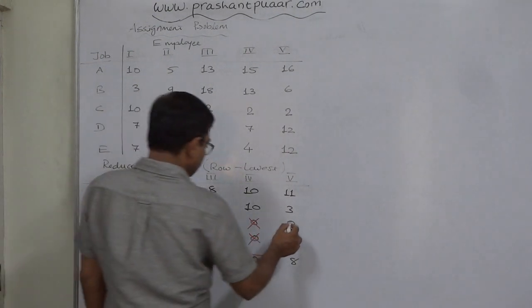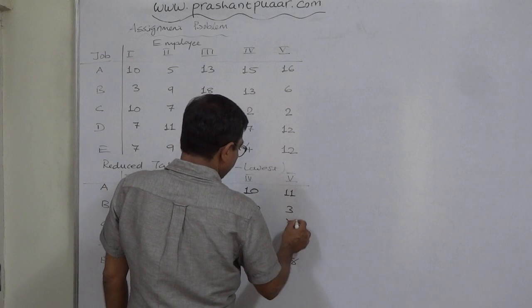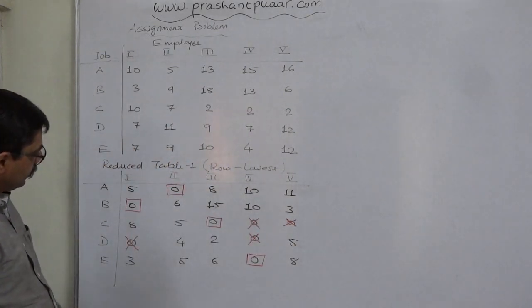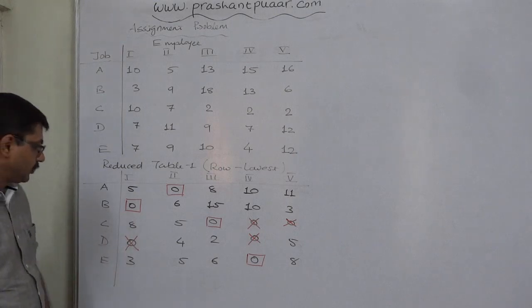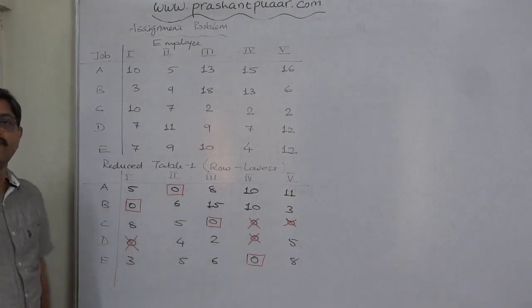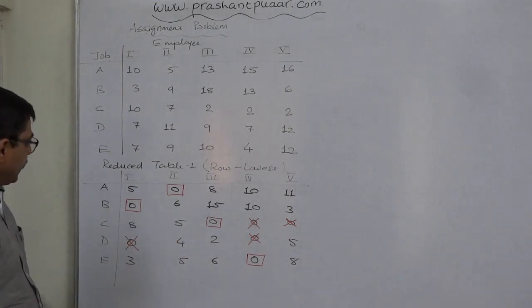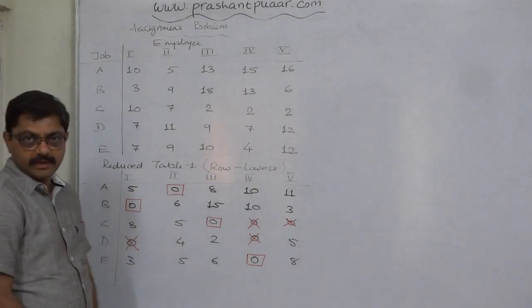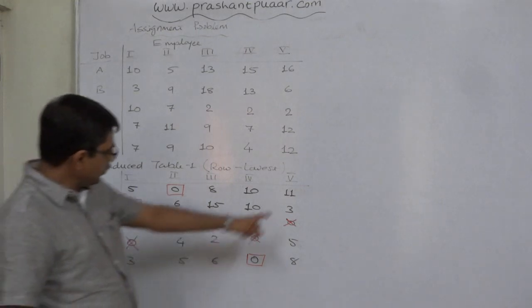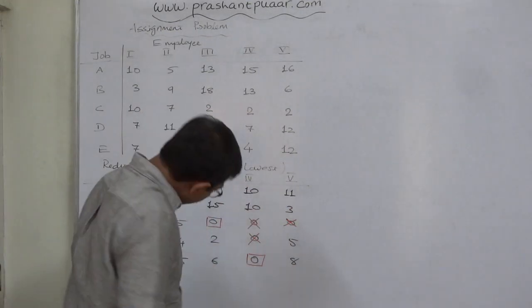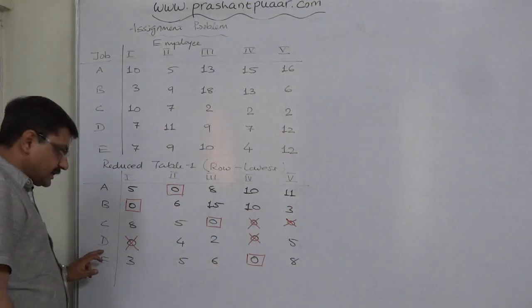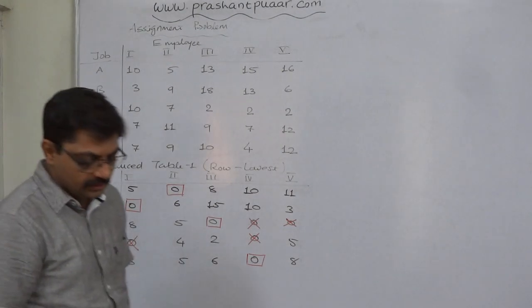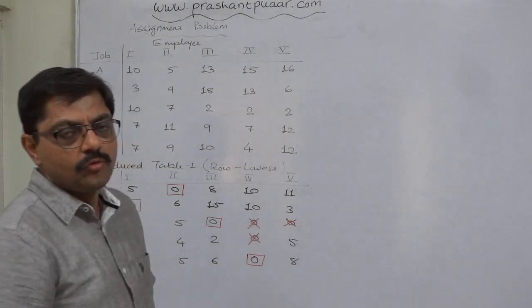We cancel the zero in the same row. Now we have no open zeros and only four assignments, but we have five workers and five jobs, so we need five assignments. Worker five is without any job and job D has not been assigned to anybody, so this is not the optimal solution and we need to move forward.